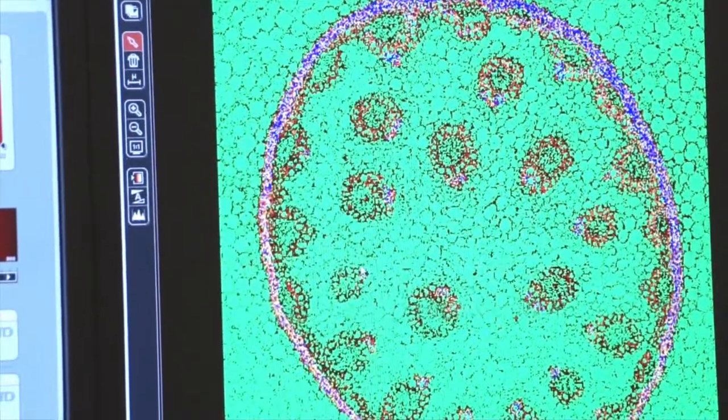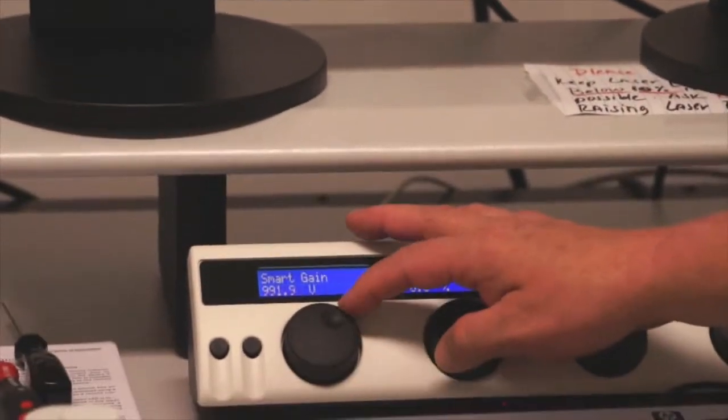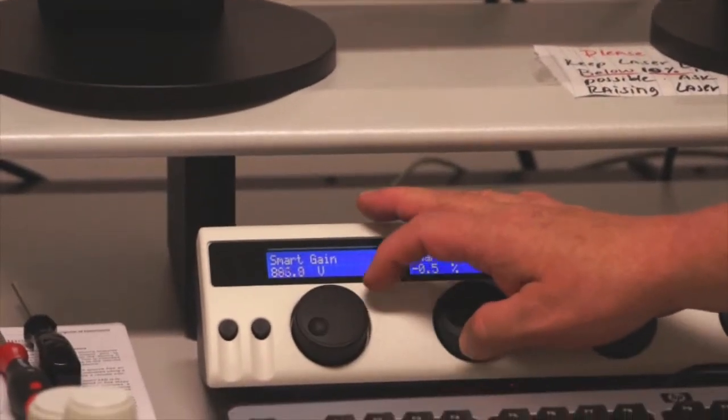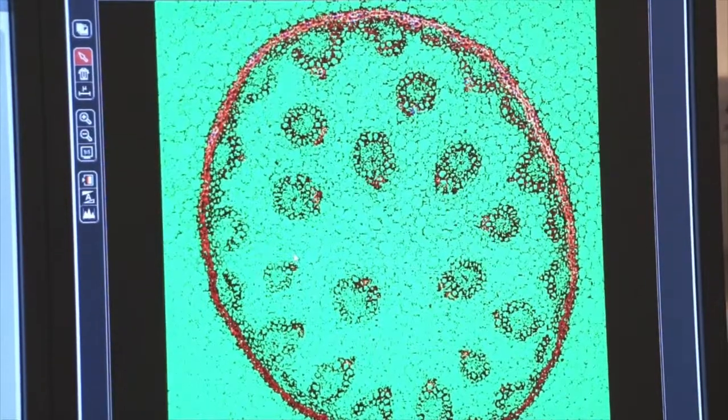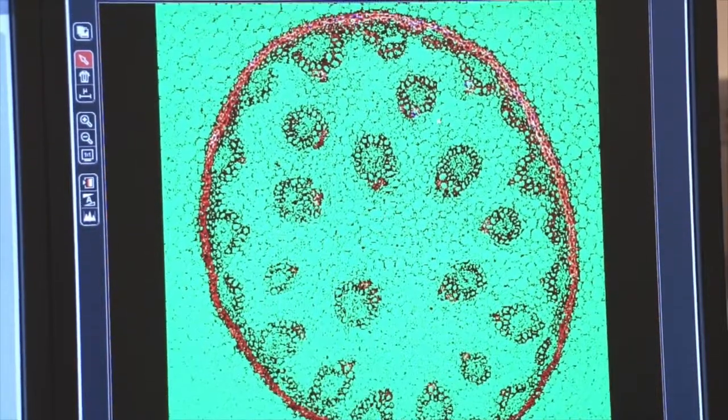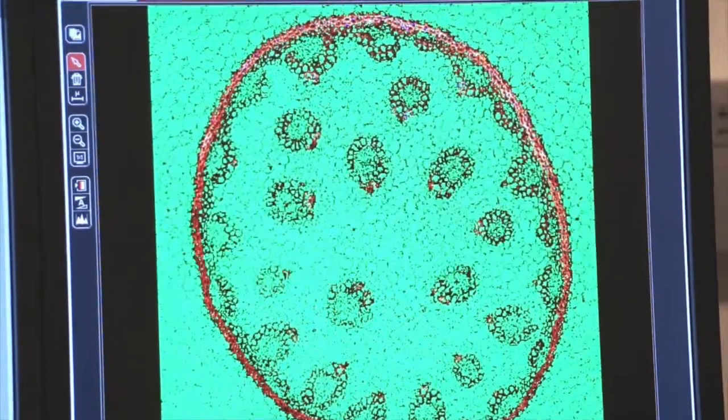Your gain control will change the number of blue pixels in your image and you want to turn the gain down until you have only a few blue pixels. As you can see here at about 891, I'm starting to see a few blue pixels in my image.